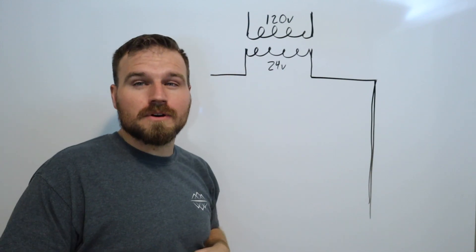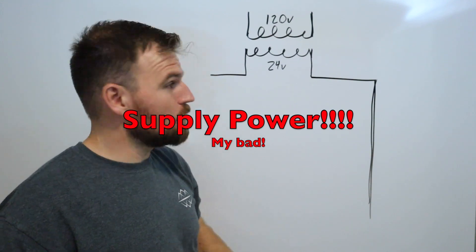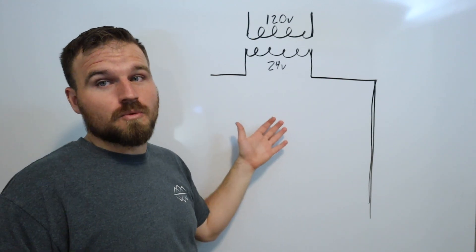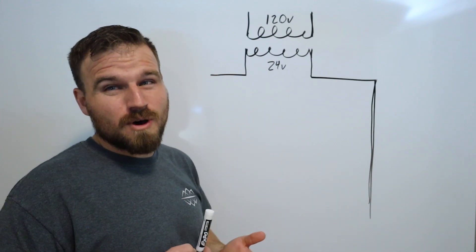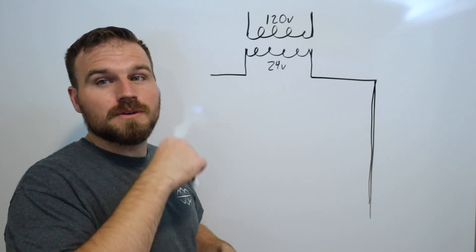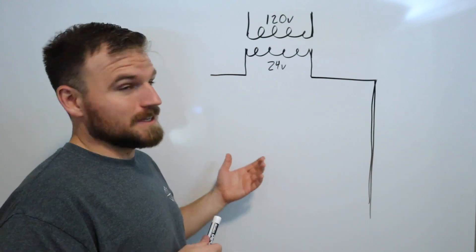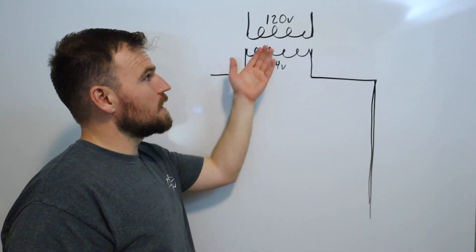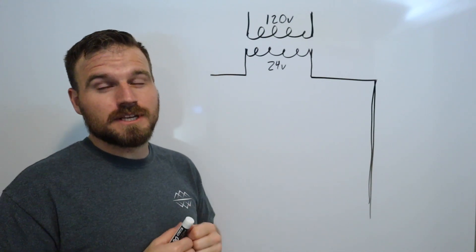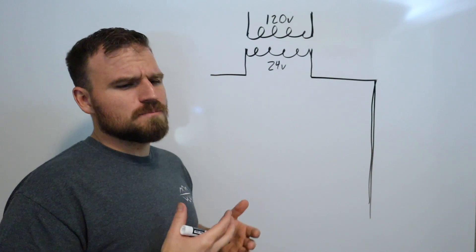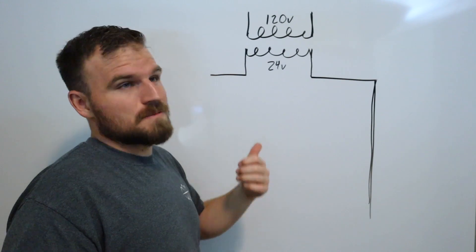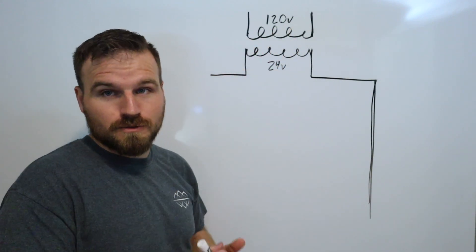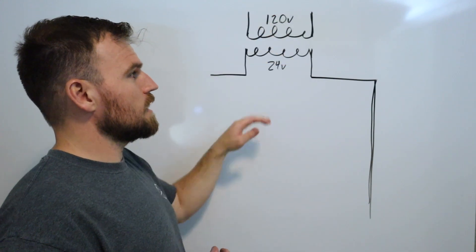I drew the transformer up top. The power coming into the transformer is called incoming power, while the power on the other side is called control power. For this circuit, our control power is 24 volts AC. It is also possible to run the whole control power off 120 volts - that's very common in simpler setups where everything runs at 120 volts, eliminating the need for a transformer altogether.